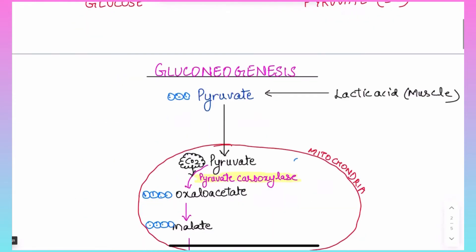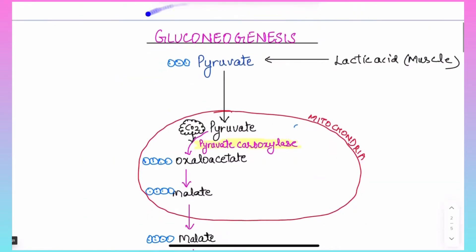Now let's begin with gluconeogenesis. Gluconeogenesis takes place inside our body during the starvation state — that means when you are not having carbohydrates from outside sources. It refers to a group of metabolic reactions in the cytosol and mitochondria to maintain blood glucose levels constant throughout the fasting state.